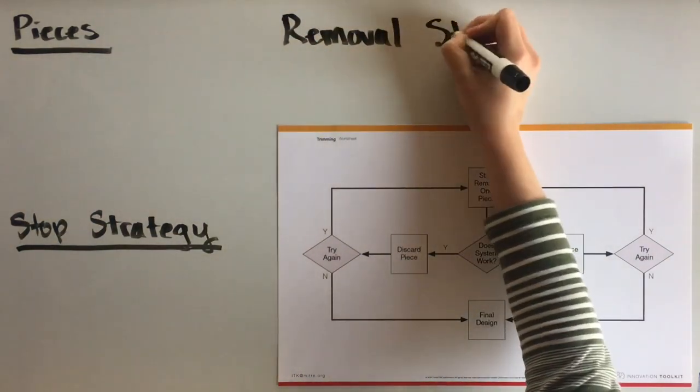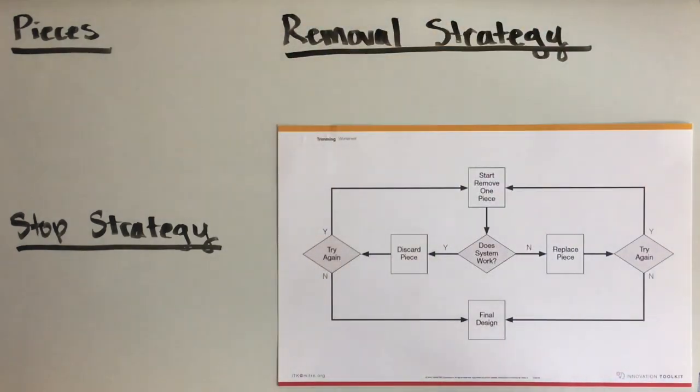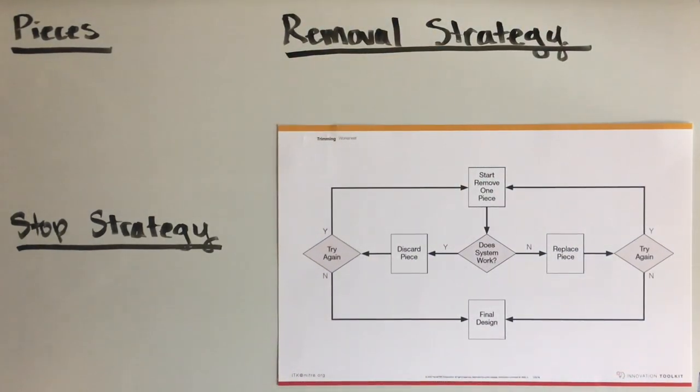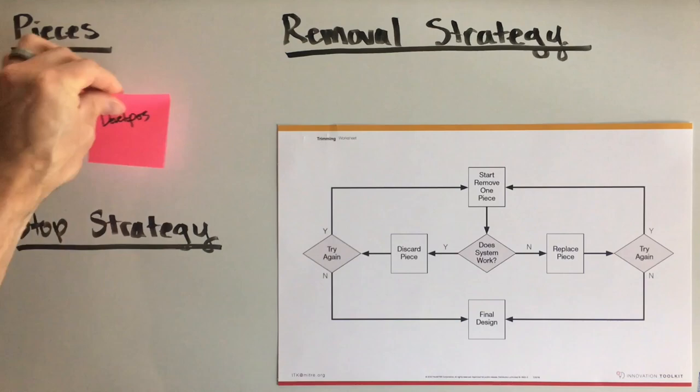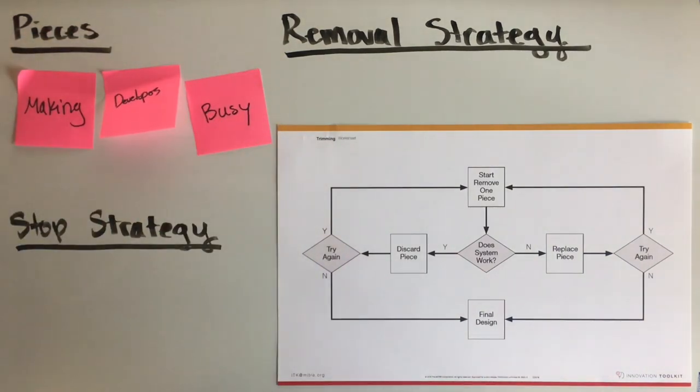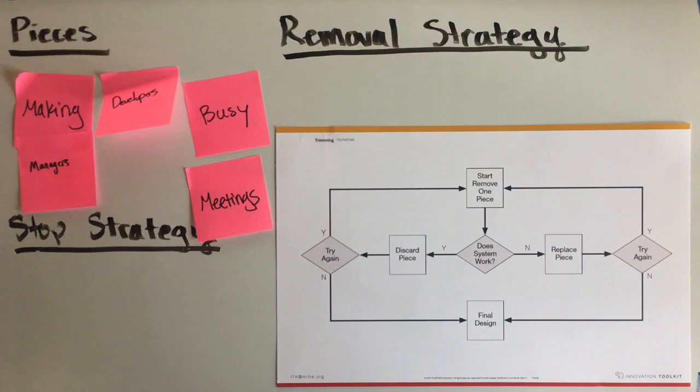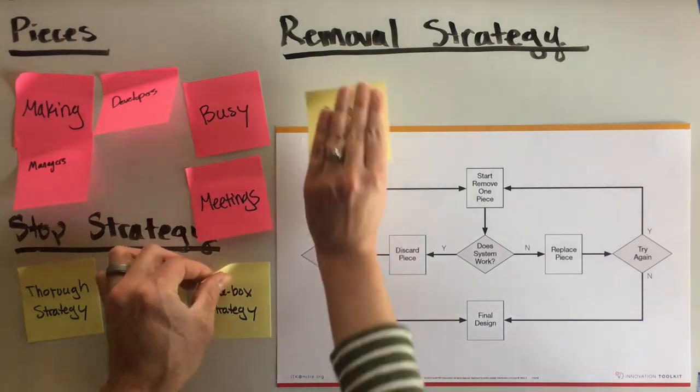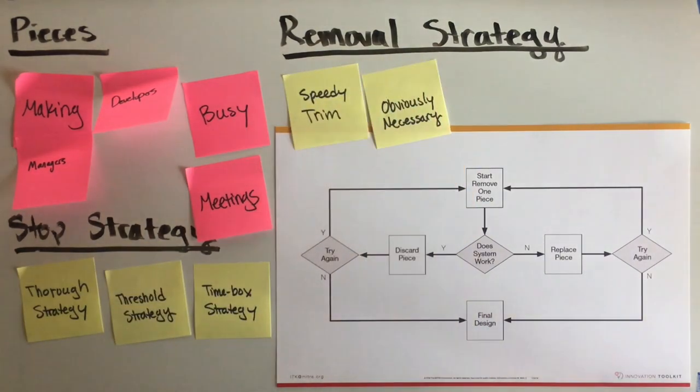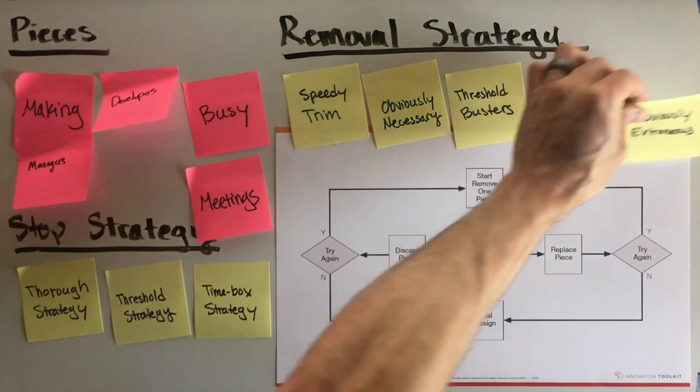Before you begin the trimming process, there are a few things you need to identify. First, list all of the pieces of the current design, product, or process. Whatever it is you want to simplify. Second, define a strategy for knowing when to stop your trimming experiment. Third, identify a removal strategy to decide which piece to start trimming.